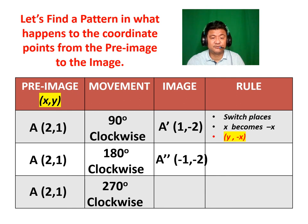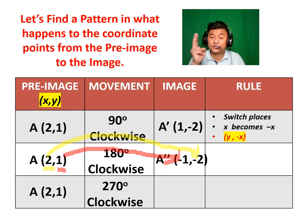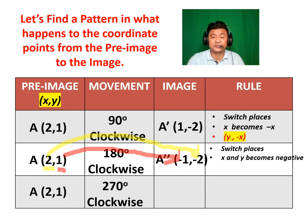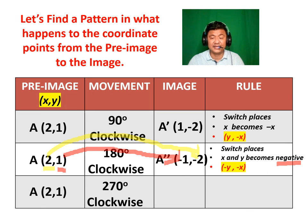Let's write down our observations. The original X went there, and the original Y, which is the second number, became the first number — they're switching. Check out the signs: they both became their opposites. So X and Y both become negative — the opposite. Let's write it down as (negative X, negative Y).